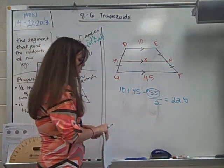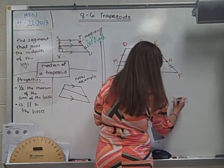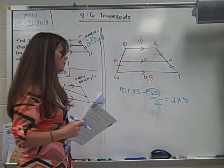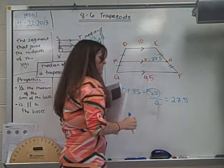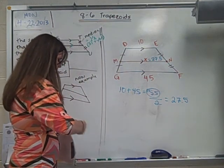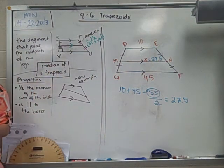So to find that number, 10 plus 45 gives you 55. 55 divided by 2 is going to give you 22.5. No, that's not correct. 27.5. Without a calculator, let's see how good I am. So check it. Your midpoint segment is going to be 27.5. There's one example of what you might see. Now, let me give you another example.